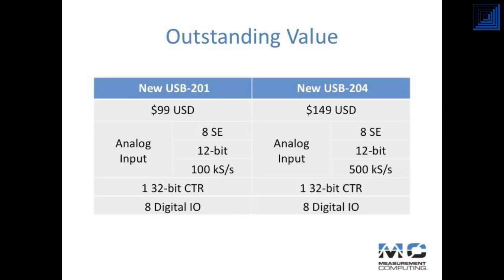Both the USB 201 and 204 provide a single counter and 8 individually configurable DIO channels. Each DIO channel, when configured as an output, can drive 24 mA, enough to drive most relays.